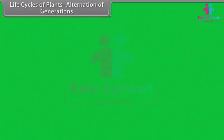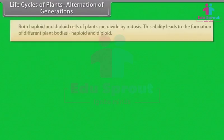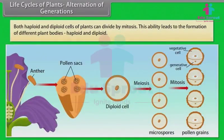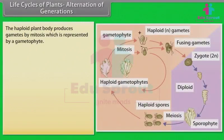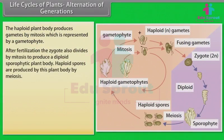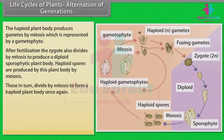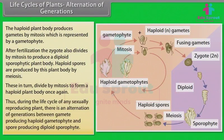Life Cycles of Plants — Alternation of Generations. Both haploid and diploid cells of plants can divide by mitosis. This ability leads to the formation of different plant bodies — haploid and diploid. The haploid plant body produces gametes by mitosis, which is represented by the gametophyte. After fertilization, the zygote also divides by mitosis to produce a diploid sporophytic plant body. Haploid spores are produced by this plant body by meiosis, which in turn divide by mitosis to form a haploid plant body once again. Thus, during the life cycle of any sexually reproducing plant, there is an alternation of generations between the gamete-producing haploid gametophyte and the spore-producing diploid sporophyte.